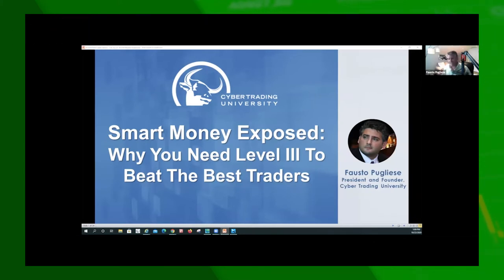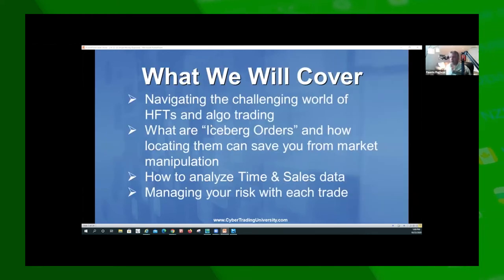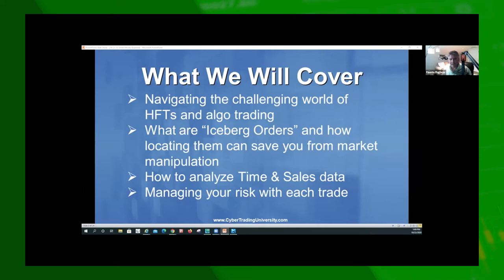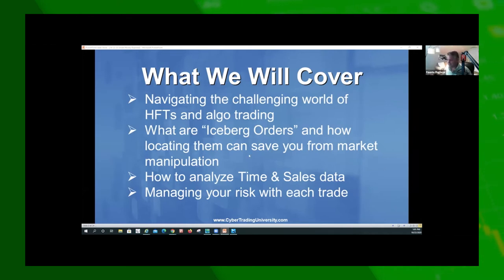We're going to talk about Level 3 and Level 4. Everything you see here will be recorded, so don't worry if you missed anything. Over the next 45 minutes I'm going to cover: navigating the challenges of high-frequency trades, what iceberg orders are — by the way, I came up with that term over 20 years ago and now it's used in BookMap — and you saw that EVK trade with the 200,000-share seller at five dollars, that's an iceberg order. I'll also cover how to utilize time and sales, and how to manage your risk in everyday trading.